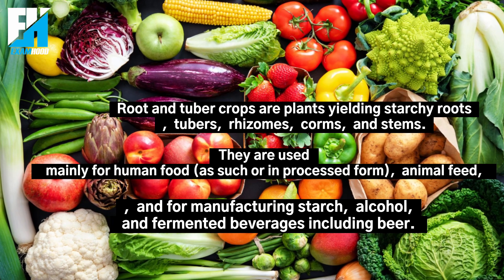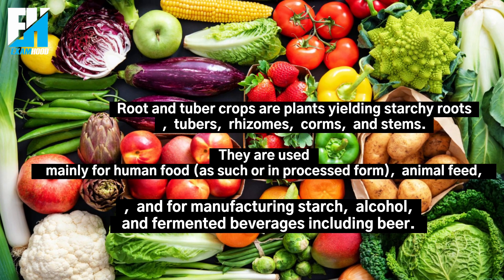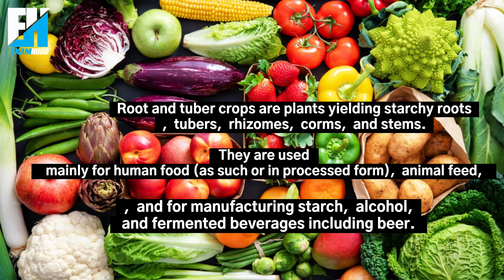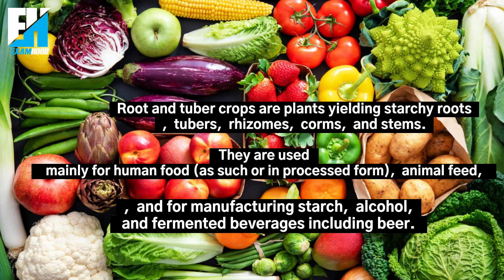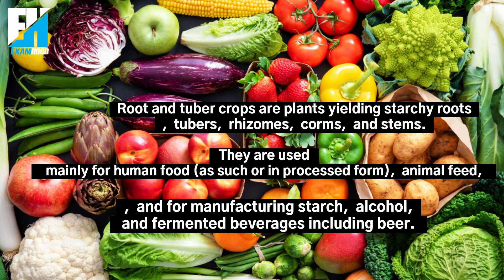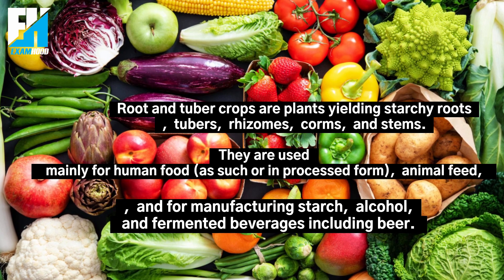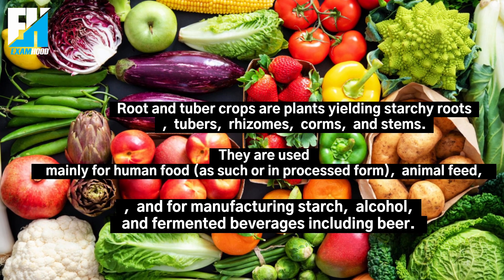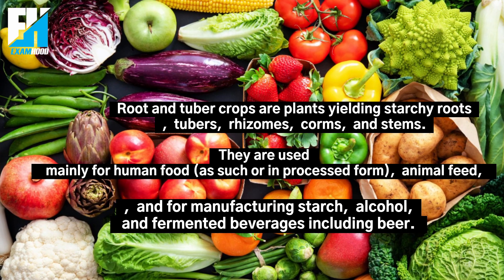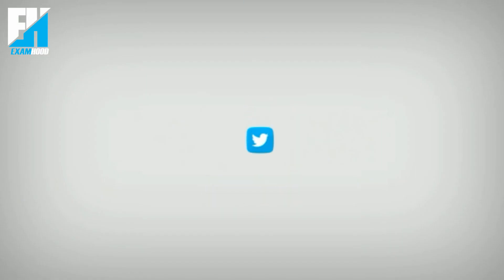Tuber crops are a source of vitamins and carbohydrates. Root and tuber crops are plants yielding starchy roots, tubers, rhizomes, corms, and stems. They are used mainly for human food as such or in processed form, animal feed, and for manufacturing starch, alcohol, and fermented beverages including beer. Thanks for watching, see you in the next video.